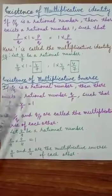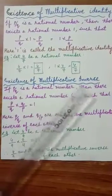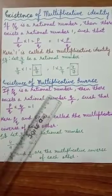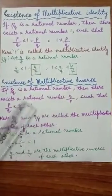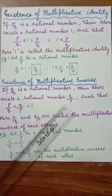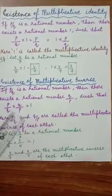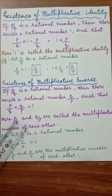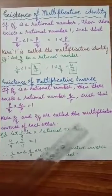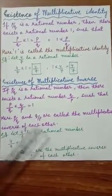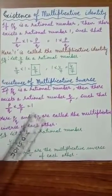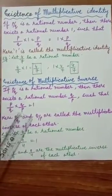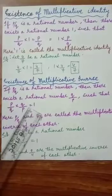Now, existence of multiplicative inverse. If p by q is a rational number, then there exists a rational number q by p such that p by q into q by p equals 1. Here, p by q and q by p are called the multiplicative inverse of each other. This means we want 1 as an answer, so any rational number multiplied with the reciprocal of itself will give 1.